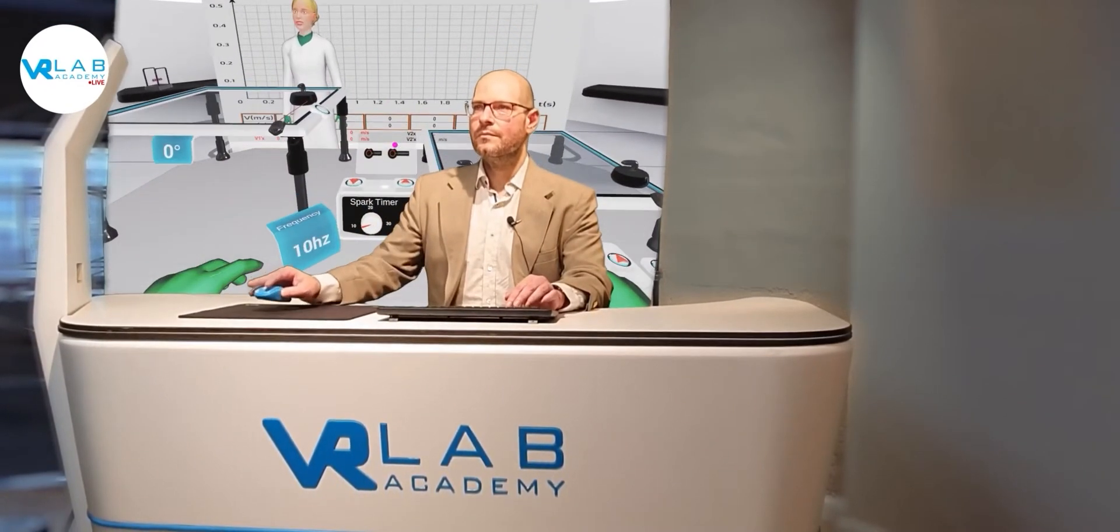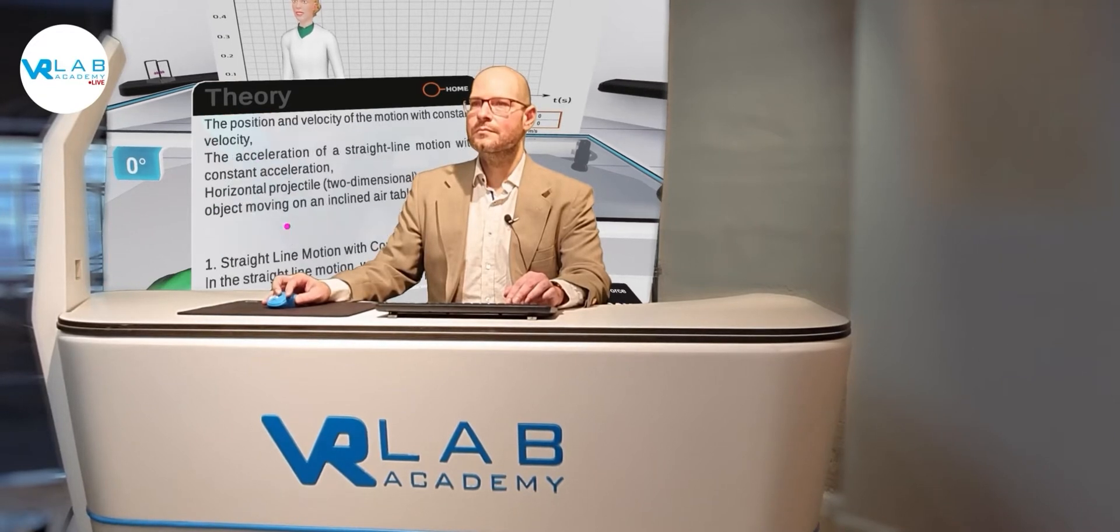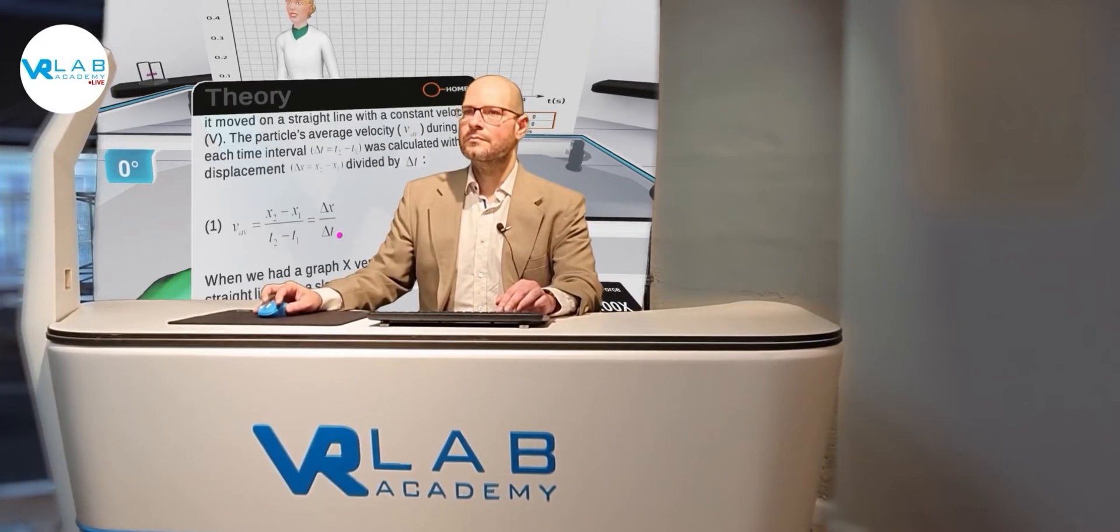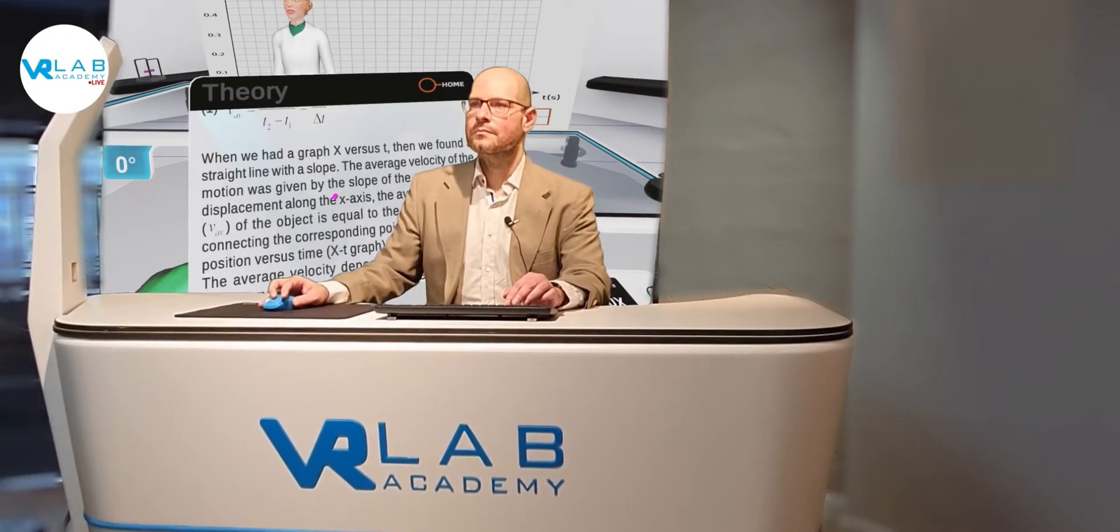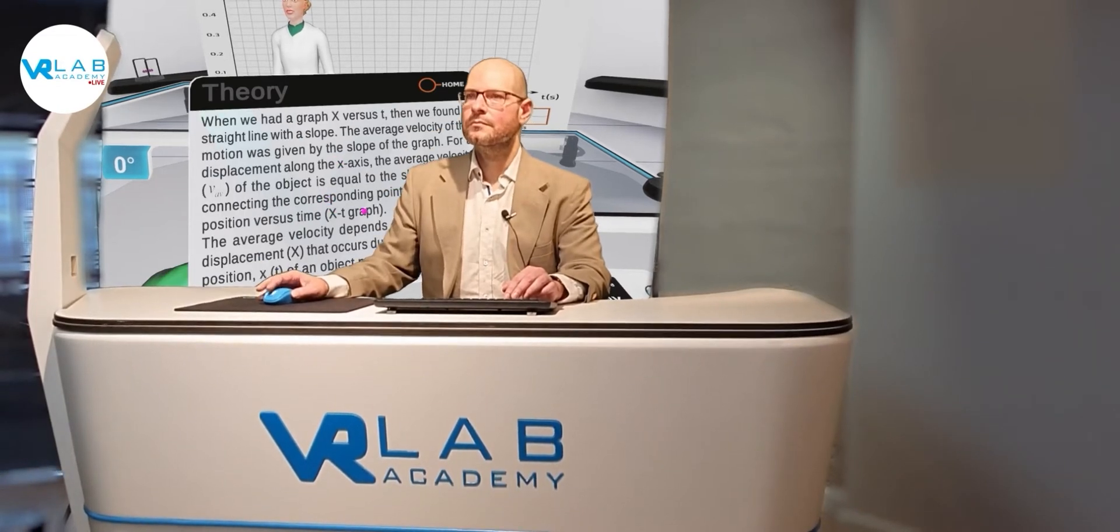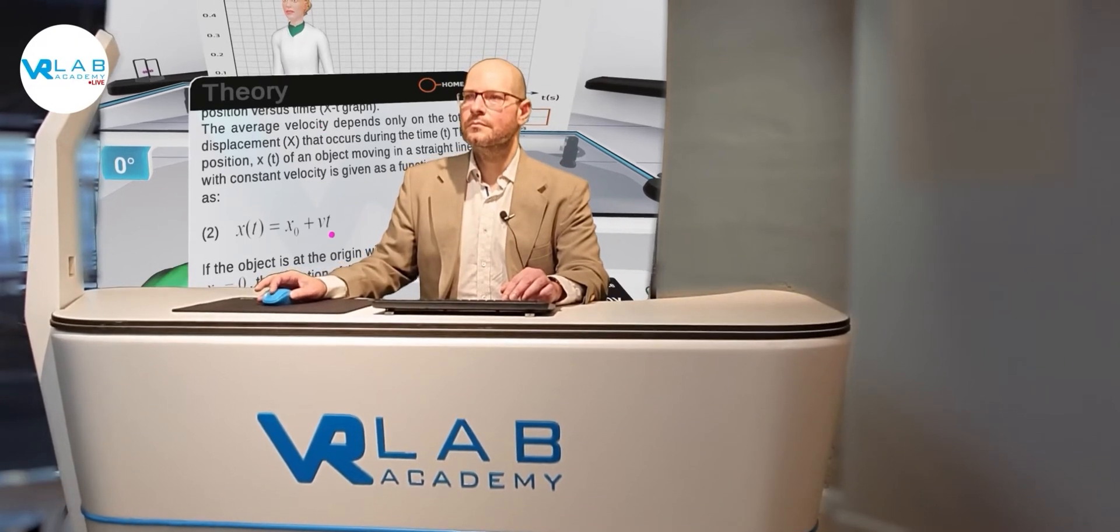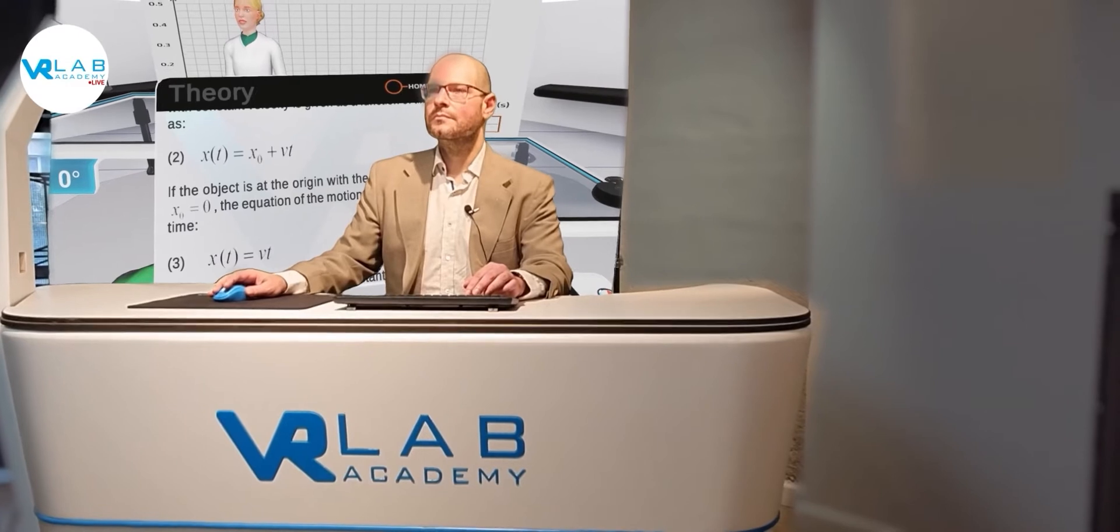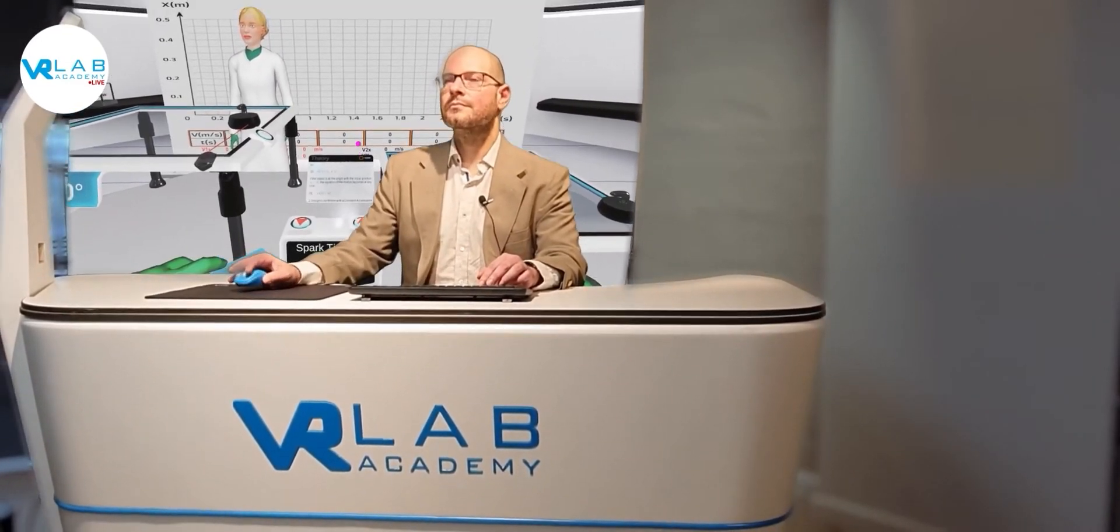Hey there, welcome to the VR Lab Academy. I spy a science fan. We will be experimenting with the air table experiment. First, we will do straight line motion with constant velocity. Since there is no net force acting on the moving object, the puck, it moves on a straight line with constant velocity. The average velocity depends only on the total displacement x that occurs during the time t. The position x(t) of an object moving in a straight line with constant velocity is given as a function of time as x₀ + vt. If the object is at the origin of the initial position x₀ equals 0, the equation of motion becomes total displacement as a function of time equal to vt. So the object travels equal distance in equal time intervals along a straight line.